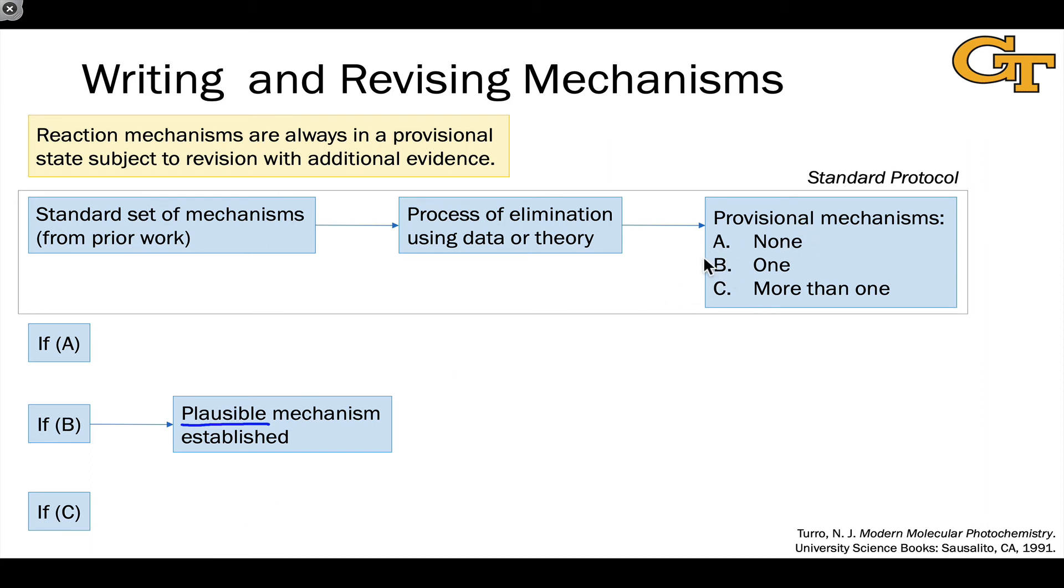What if there are no provisional mechanisms, nothing from prior work that relates to this reaction that we're seeing in front of us? Well in that case, we've of course got to devise a new mechanism employing new elementary steps. And when we do that, we want to repeat the standard protocol, collecting more evidence or thinking through the theory on a deeper level to really establish that the mechanism we've come up with,